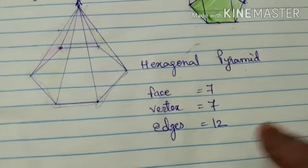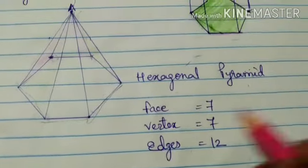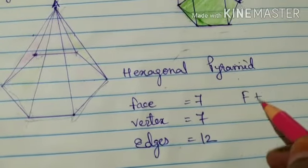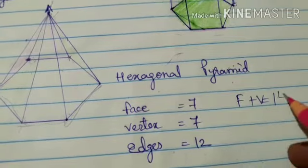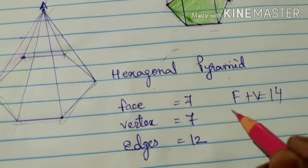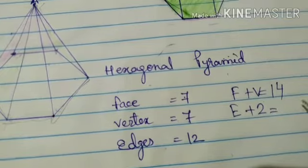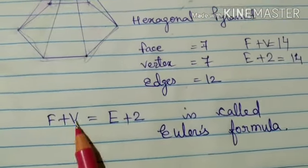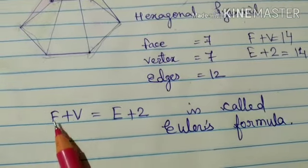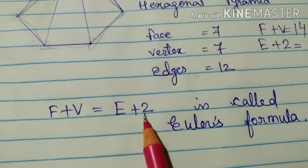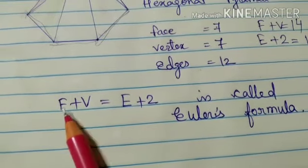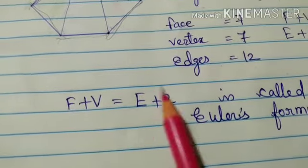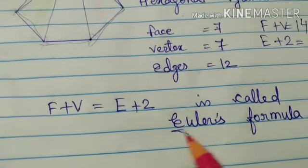Now in the hexagonal pyramid, if you will see here F plus V is 7 plus 7, that is 14. And if you will see E plus 2, it is also 14. Hence we can see from these observations that F plus V equals E plus 2 — meaning faces plus vertices equals edges plus 2. This relation is known as Euler's formula.